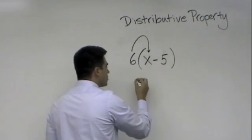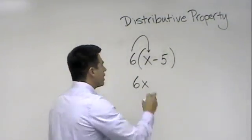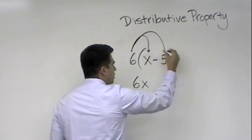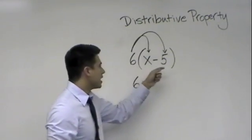So, 6 times x would give us 6x. And I'm going to load up the rocket launcher again and go, and I'm going to go ahead and hit the 5.